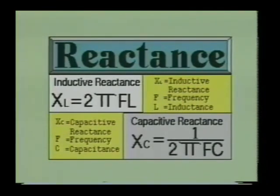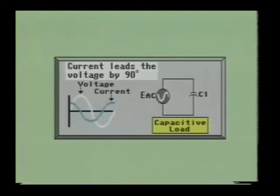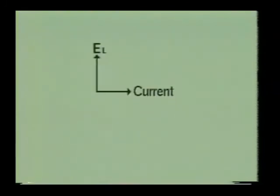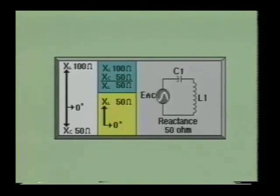Reactance is the opposition that a capacitor or inductor has in an AC circuit. Reactance is measured in ohms, just like resistance and impedance. The value of reactance will depend largely on the frequency of the AC signal being applied. In an AC circuit containing an inductor, the voltage will lead the current by 90 degrees. In an AC circuit containing a capacitor, the current will lead the voltage by 90 degrees. Therefore, since the voltage leads the current by 90 degrees in a purely inductive circuit and the voltage lags current by 90 degrees in a purely capacitive circuit, the effect of one reactance will tend to cancel the other. For example, if coil L1 has an inductive reactance of 100 ohms and capacitor C1 has a capacitive reactance of 50 ohms, the total reactance of this circuit would be 50 ohms of inductive reactance, obtained by subtracting the smaller reactance from the larger.